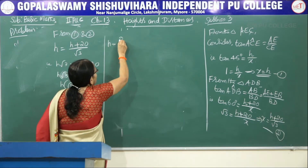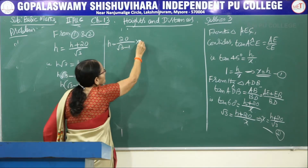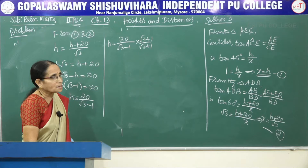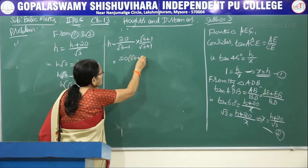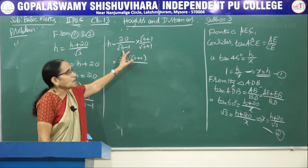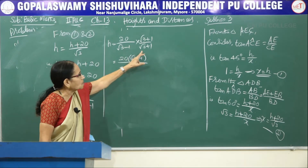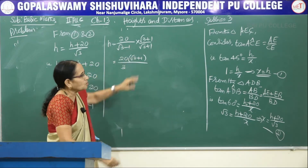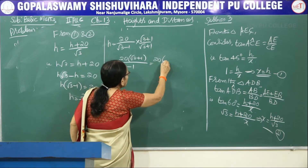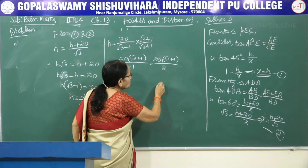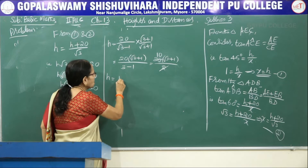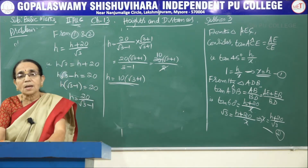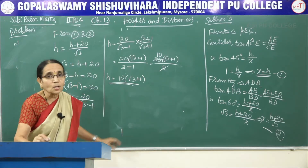We have an irrational quantity in the denominator, so let us rationalize so that the number can be further simplified. H equals 20 divided by (root 3 minus 1). Multiply and divide by the rationalizing factor (root 3 plus 1). So this becomes 20 into (root 3 plus 1) divided by (root 3 minus 1)(root 3 plus 1), which is of the form (A minus B)(A plus B) = A squared minus B squared. That is root 3 squared minus 1 squared = 3 minus 1 = 2. So we get 20 into (root 3 plus 1) divided by 2, which simplifies to 10 into (root 3 plus 1). So H equals 10(root 3 plus 1).